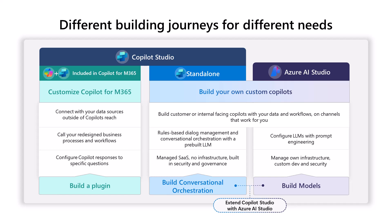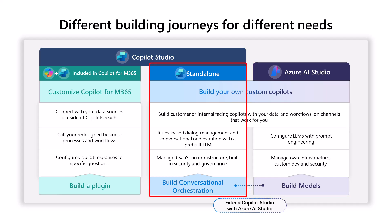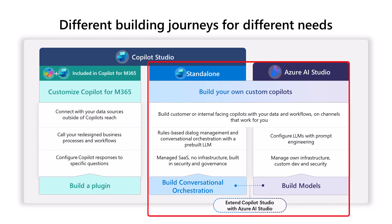To summarize: when building custom copilots, you need to determine whether everything you're going to do is just generative within a single model, or whether you're going to need conversational orchestration. Most people will need conversational orchestration, and many will also need custom models implemented in Azure AI Studio. So the real question is: what are your requirements — do you need one, the other, or both? And the most common answer is both.